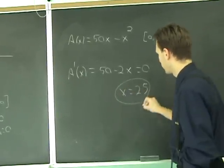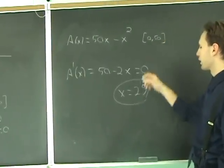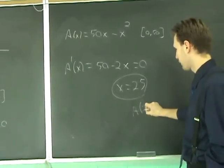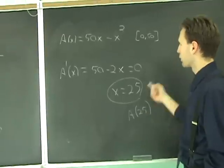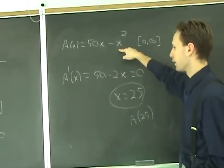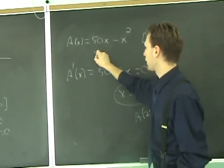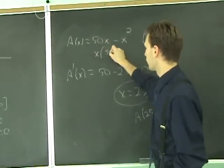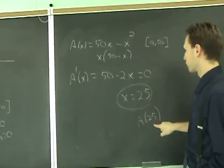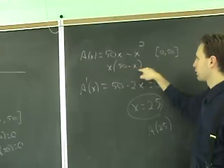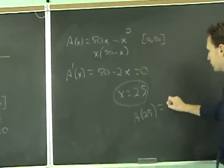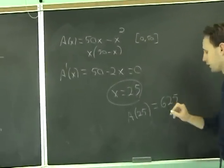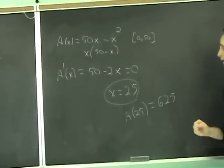So, then you need to do, in addition to A of zero and A of 50, you need to do A of 25. A of 25, when you plug it back into the function, you get, well, when you had it factored, it was x times 50 minus x. So, A of 25 is going to be 25 times 25, which is 625. And, that's the maximum area that you can get.